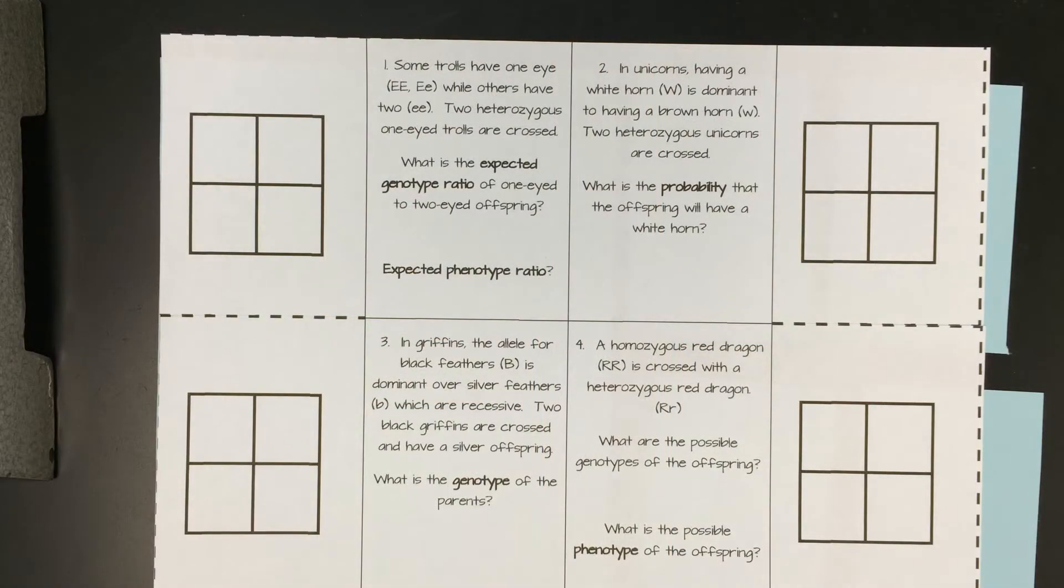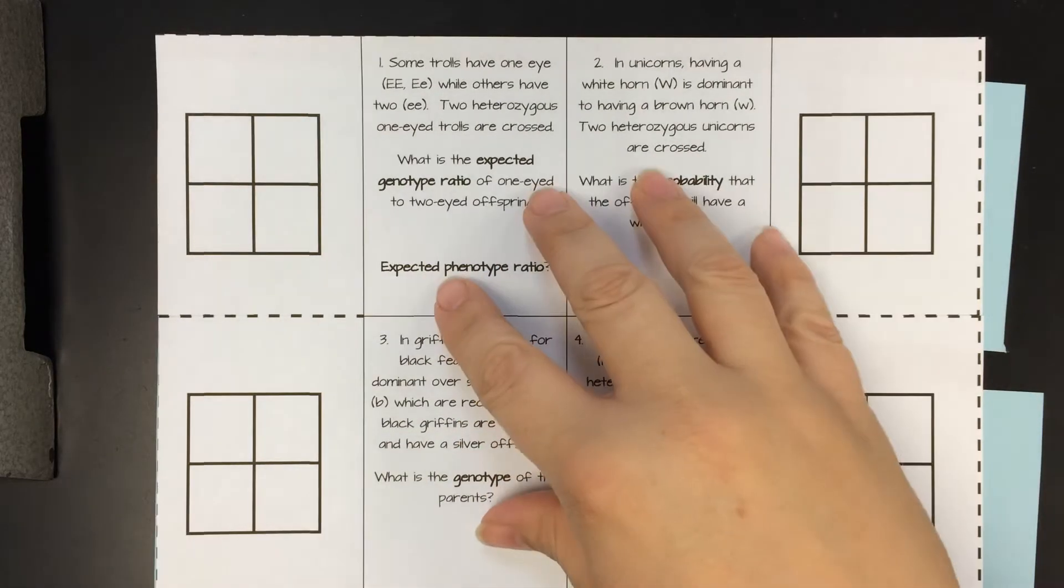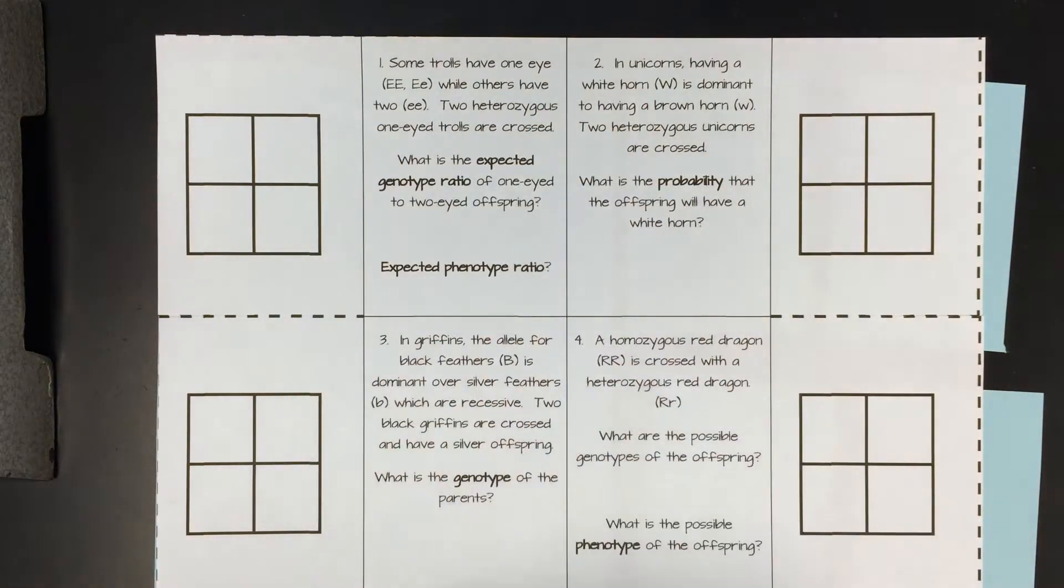Hi everyone, this is Ms. Segovia and we're going to walk through how to do the window foldable for the Punnett squares. So in this one you're going to take the worksheet that has this particular picture on it and cut out the picture.